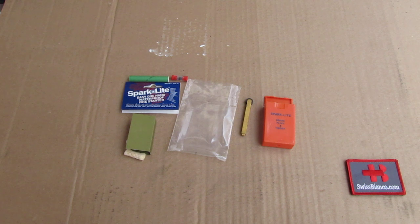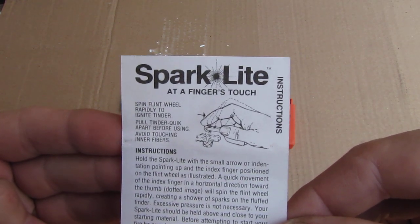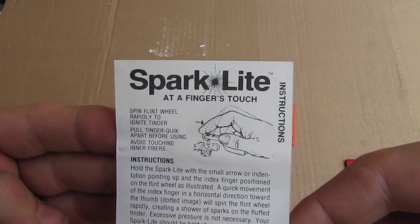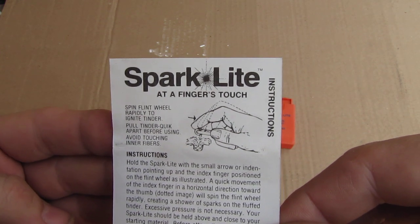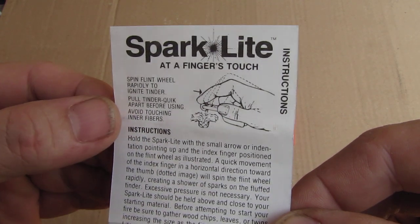First we are going to look at the manual. So we have there some more information. It's a typical wheel type flint sparker, basically like you have on a regular lighter.